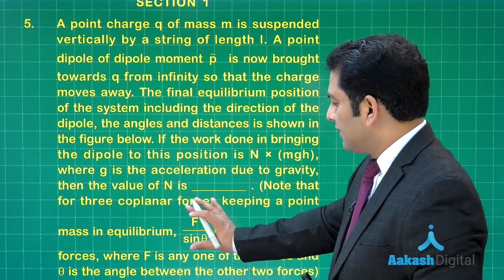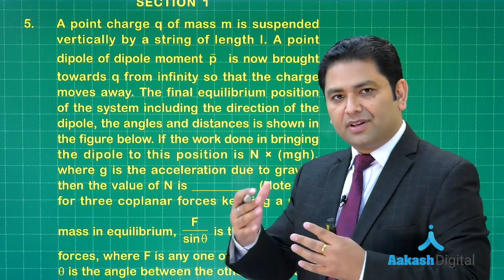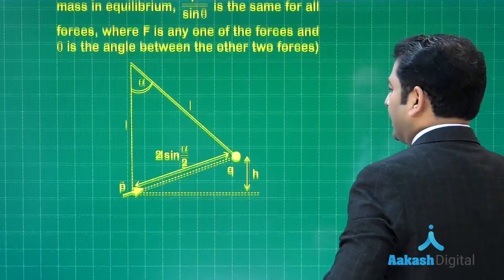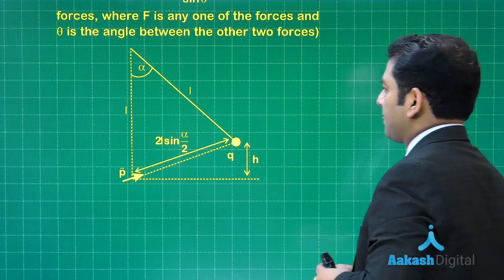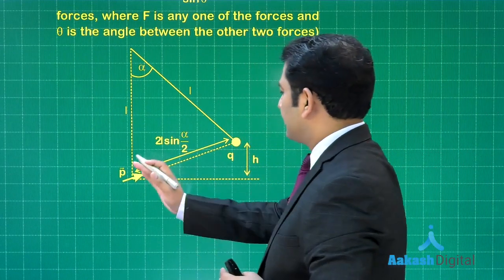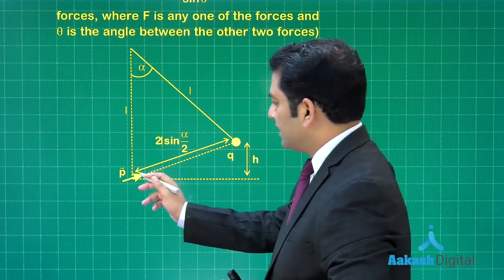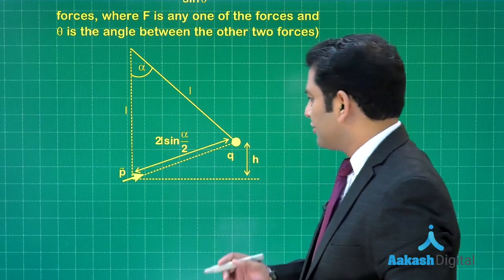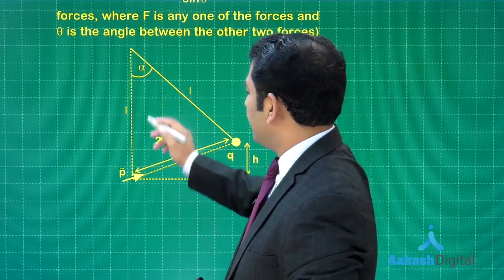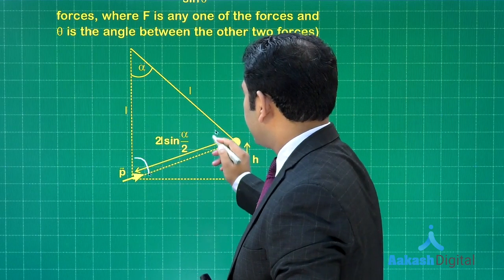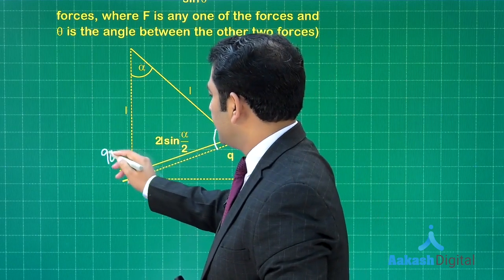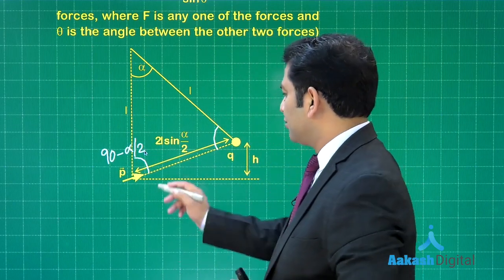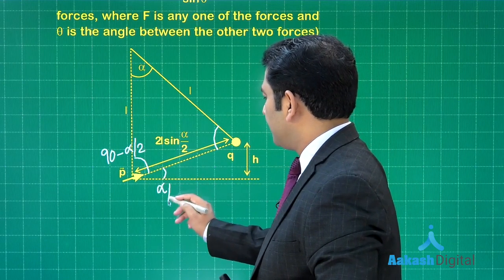An additional sentence specifies the equilibrium condition using Lamy's theorem. The charge initially was at rest; now it has reached a new deflected position, and the dipole comes to a final location. This involves a little geometry. If the string makes angle α with the vertical, the isosceles triangle gives angles (90 − α/2) each, and the relevant small angle is α/2.